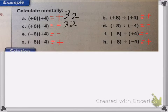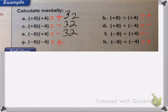Negative 8 times a positive 4 will be negative 32. And negative 8 times a negative 4 will be positive 32.